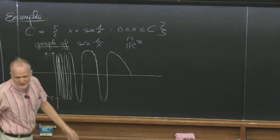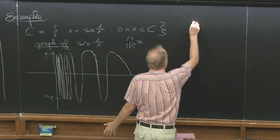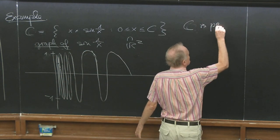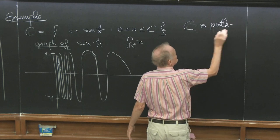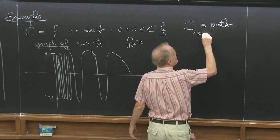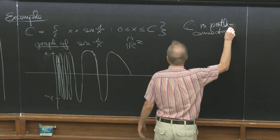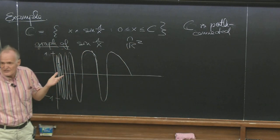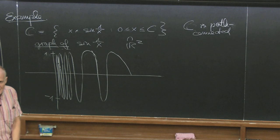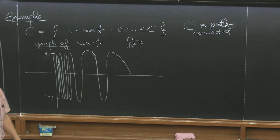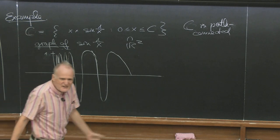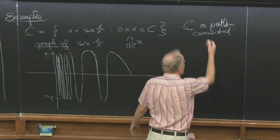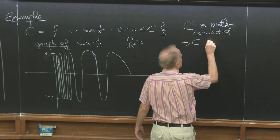C is path connected — that's easy. If you have two points, you just follow the graph, so you see the path, like the real numbers. C is path connected, so it's connected. Connected is not so easy, but if it's path connected it implies it's connected.